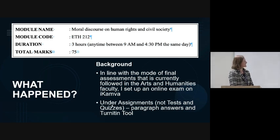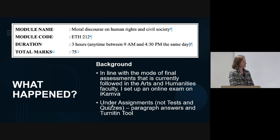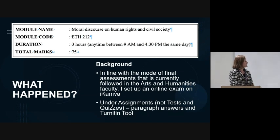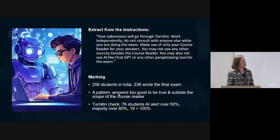The background is that in Arts and Humanities, in the faculty generally, after COVID, we are only following online assessments. You have to apply specifically or write a motivation if you want a sit-down assessment. I take my assessments for Ethics 212 under assignments, not under tests and quizzes, because the students are expected to write paragraphs or short essays. Tests and quizzes don't incorporate Turnitin, so I thought I was very clever.